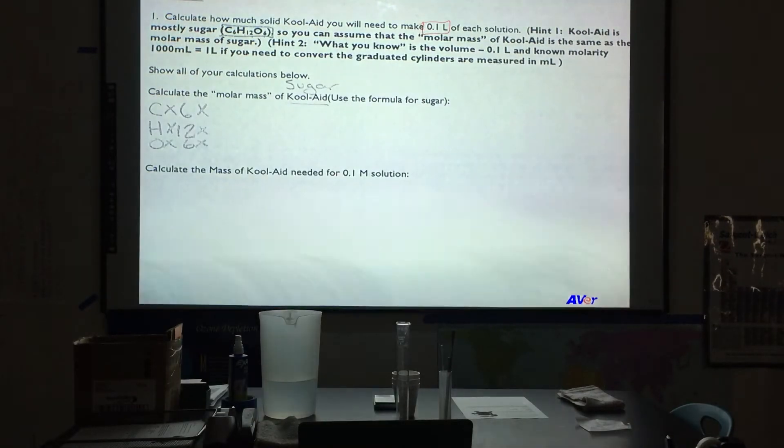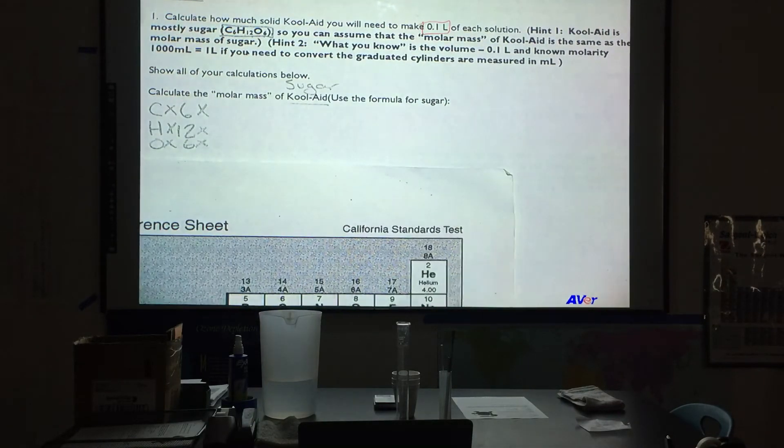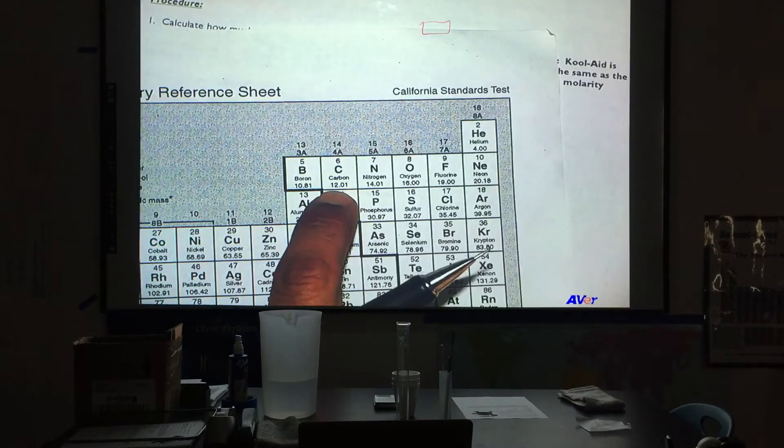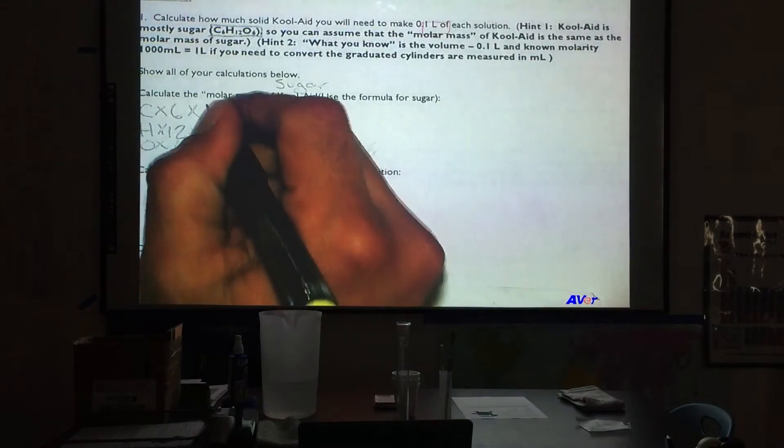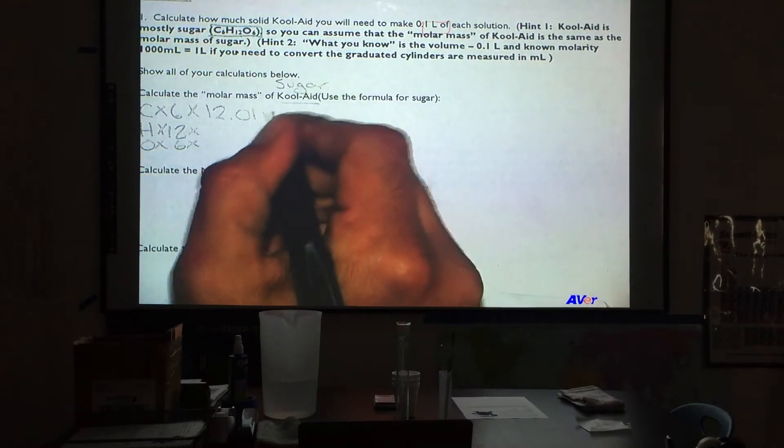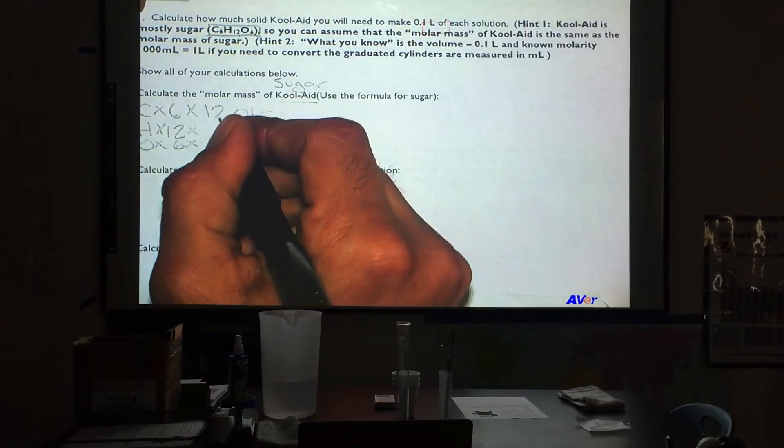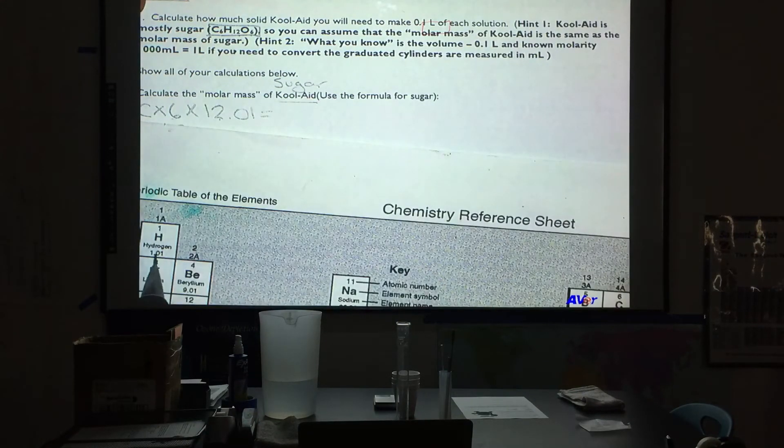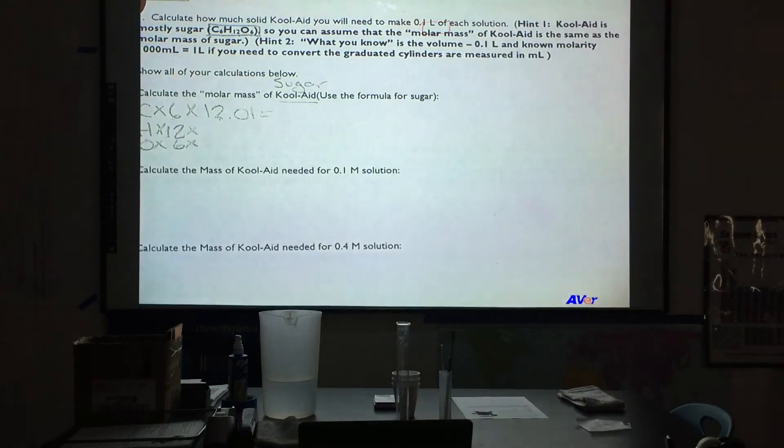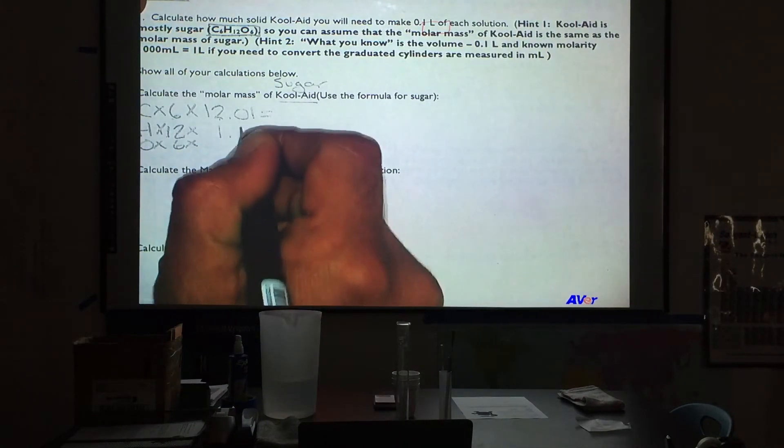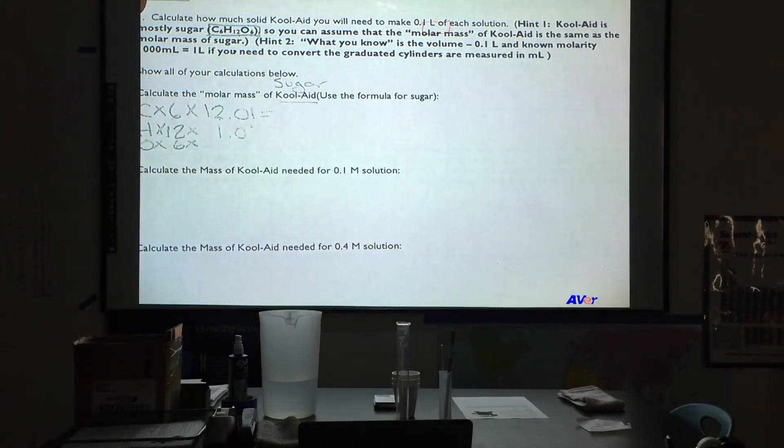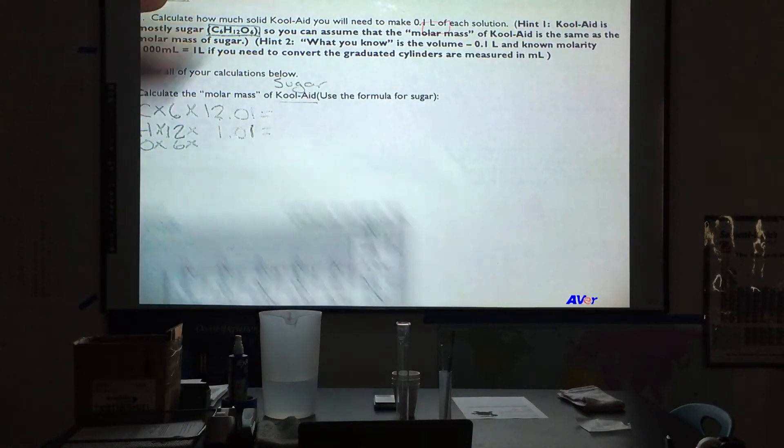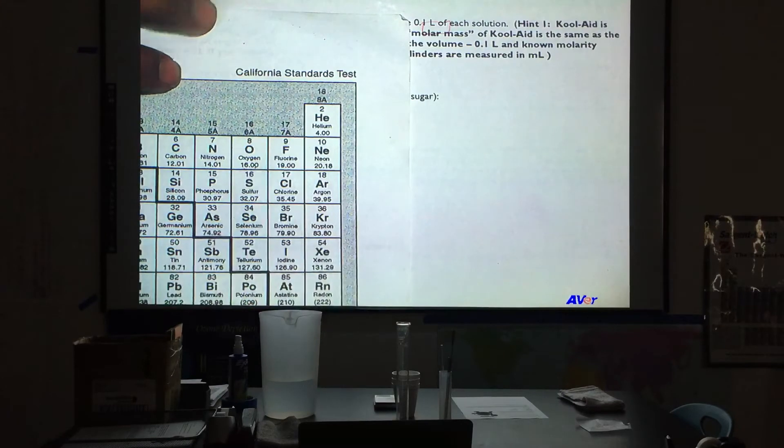From there, we'll need to find carbon. Carbon has 12.01 grams per mole. So we'll say 12.01. We're going to have to multiply. 6 times 12. Let's get all of these numbers first. Hydrogen, 1.01 grams per mole. 1.01. And then oxygen, we'll have 16 grams per mole.